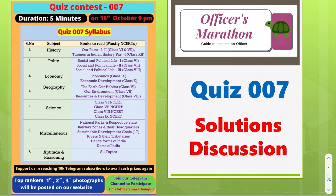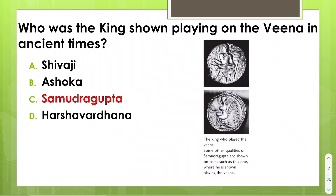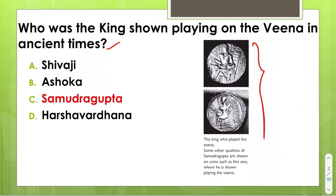Let us quickly have a look at quiz 007 solutions. The king shown playing on the veena in ancient times — this was taken from your sixth class NCERT — the king who played veena is Samudragupta.